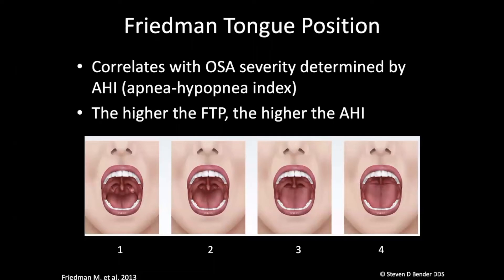The Friedman tongue position basically looks at the patient opening their mouth — not sticking their tongue out, not saying 'ah' — and what we're trying to assess is how much space is back there for air to go through.